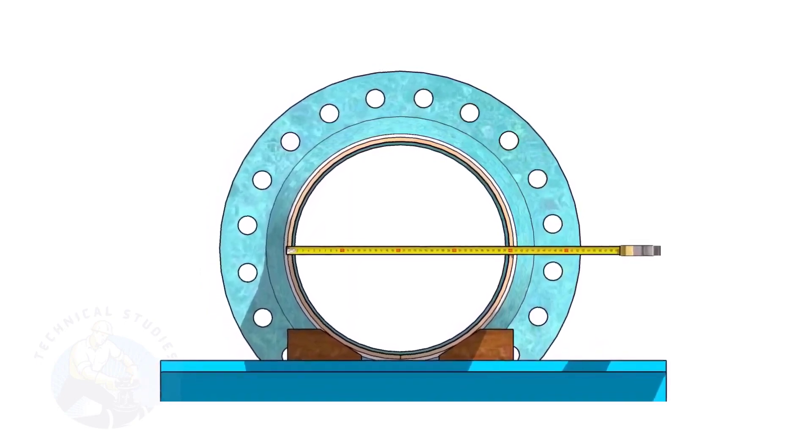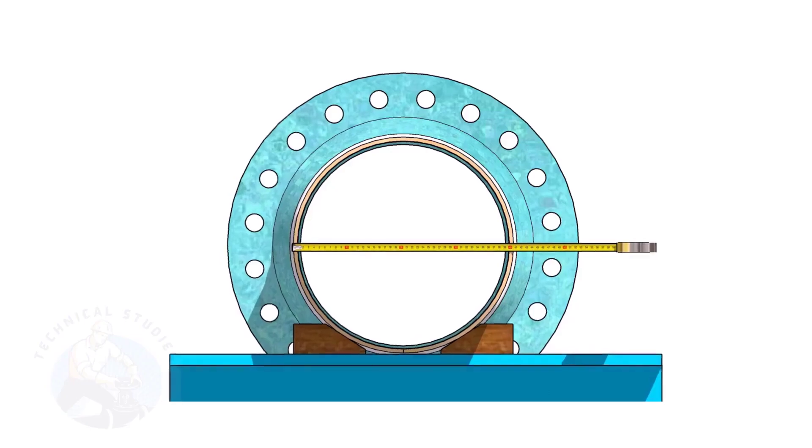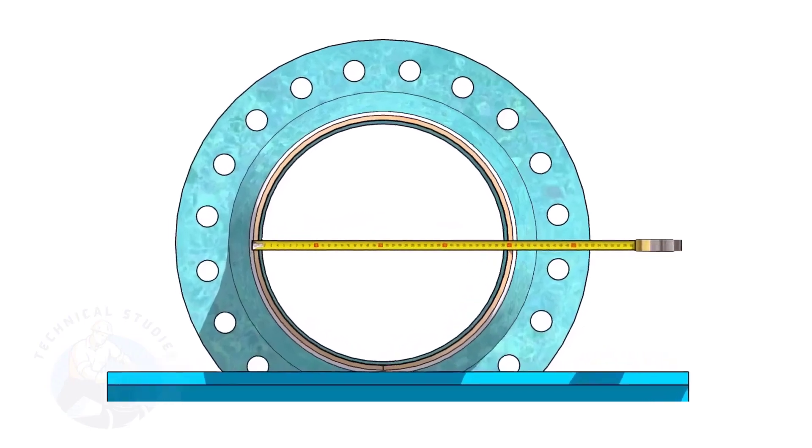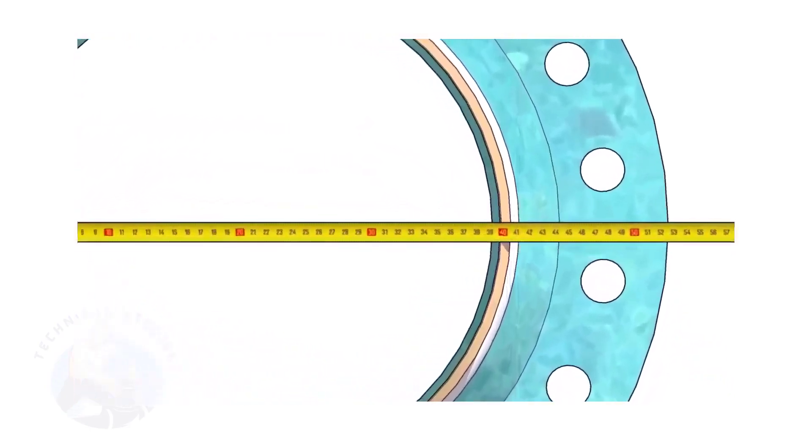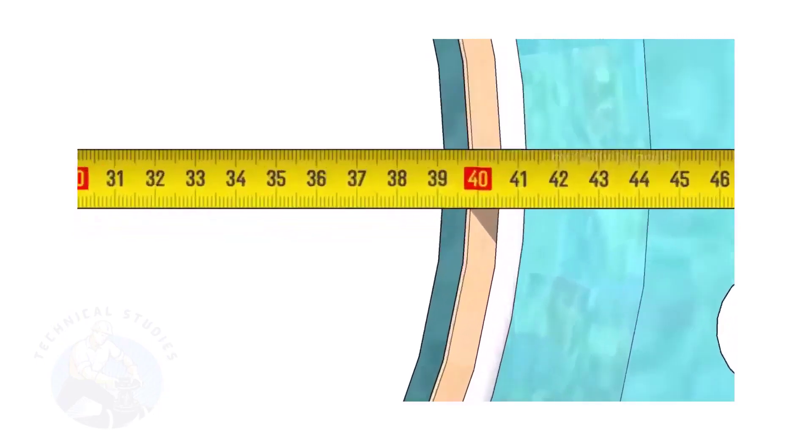Check the outer diameter of the pipe. Here, the diameter of the pipe is 406 millimeters.